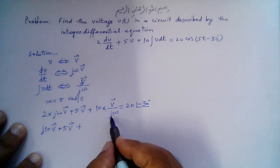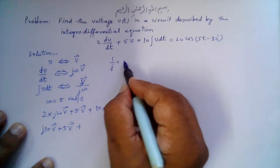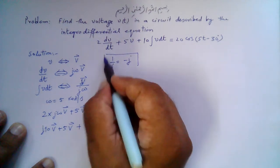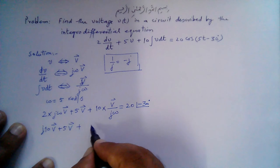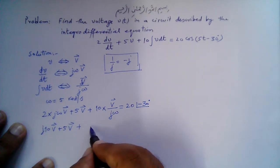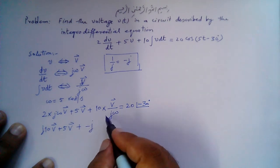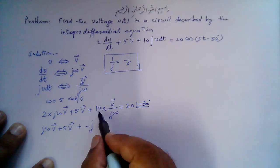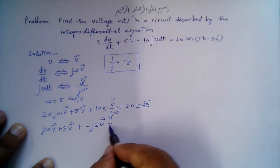Since 1/j equals -j, the last term simplifies. With 10 divided by 5 giving 2, the term becomes -j2V̄. So the equation is j10V̄ + 5V̄ - j2V̄ = 20∠-30° volts.